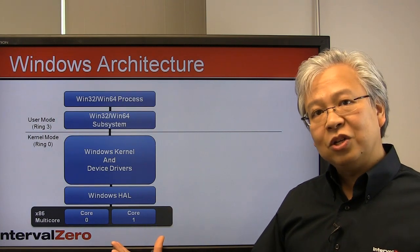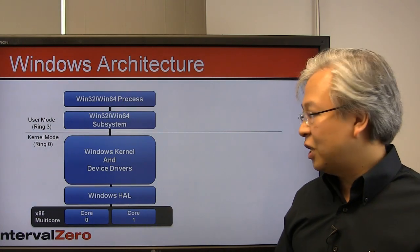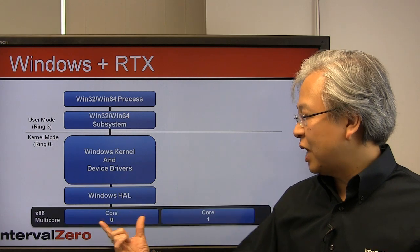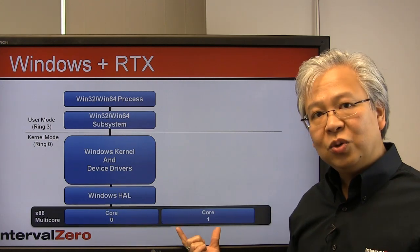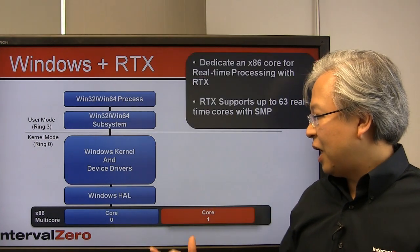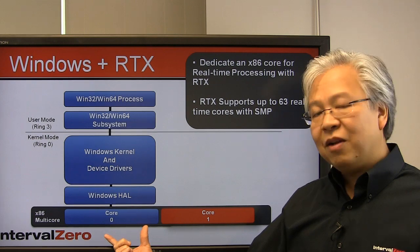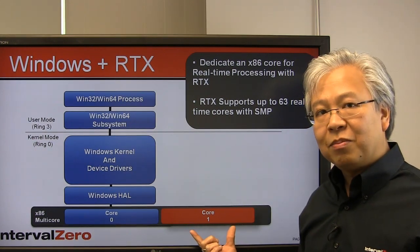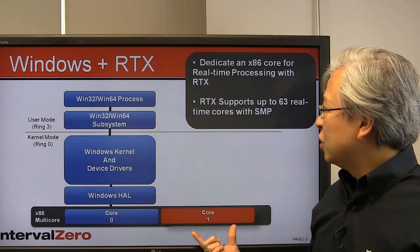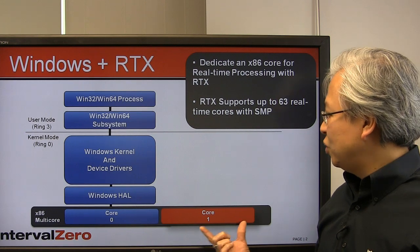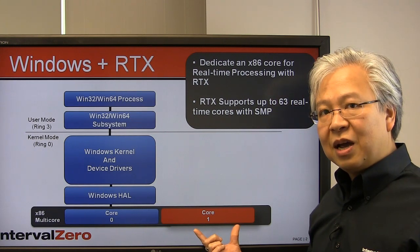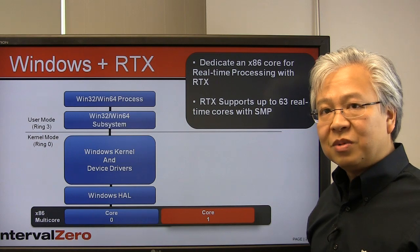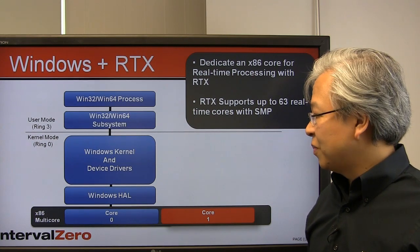Now let's introduce RTX to the equation. Once we introduce RTX, you can take these two x86 cores and dedicate one for Windows and one for real-time processing under RTX — true dedicated hard real-time on that core. By the way, RTX supports up to 63 real-time cores.